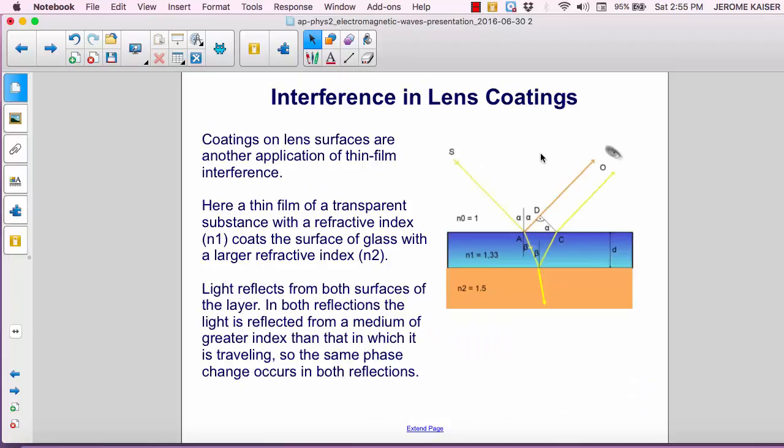Lens coatings are another application of interference in thin films. Here a thin film of a transparent substance with a refractive index of n1 coats the surface of glass with a larger refractive index of n2. The coating is shown here in blue and the glass is shown in orange.